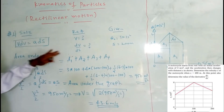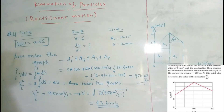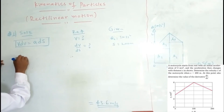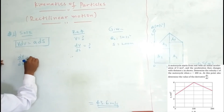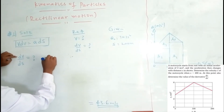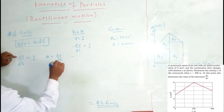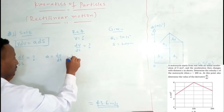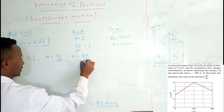The second part of the question asks for dV/dS. Using the same formula: acceleration equals dV/dT, and velocity equals dS/dT. We can combine these two expressions to define acceleration in terms of velocity and displacement.